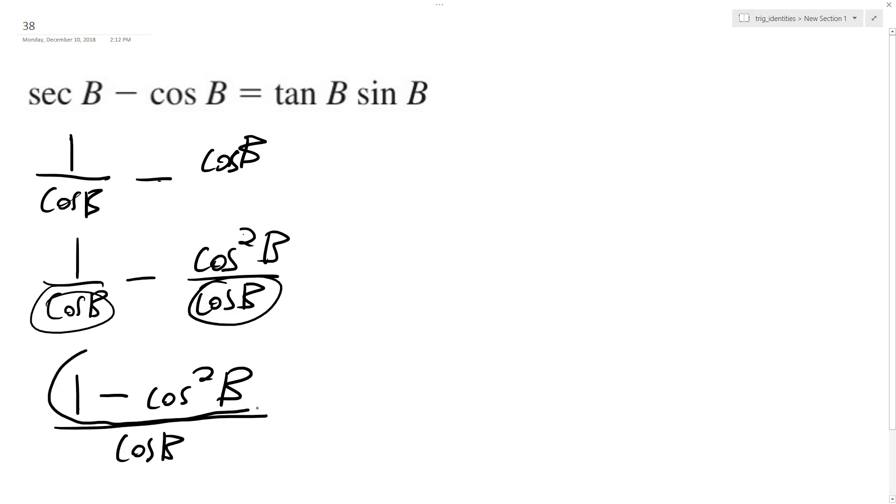This is a trig identity, it's the same thing as sine squared b. So like this, over cosine b.